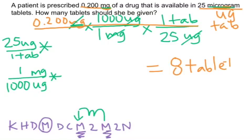The last step is just to check: does that make sense? 8 tablets seems like a reasonable amount in comparison to 800 or 0.008, for example. So I'll check that off — and that's my answer.